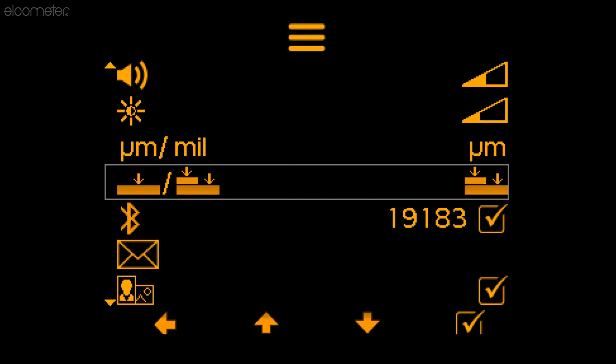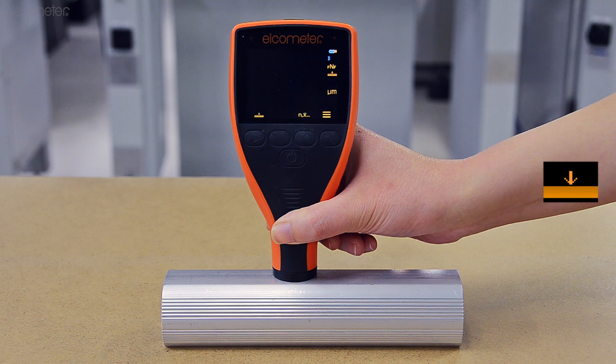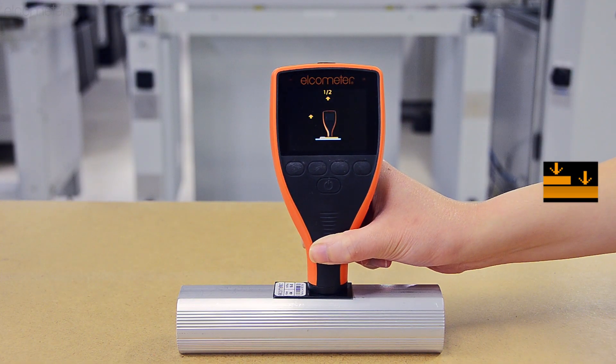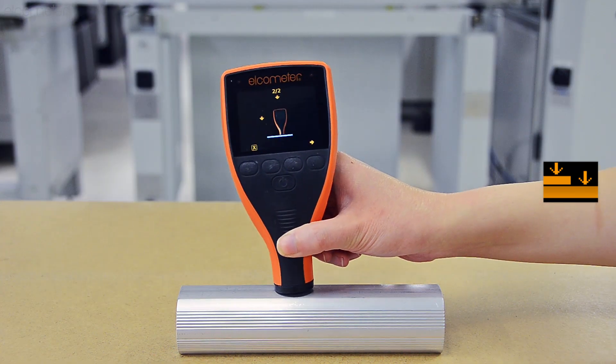Calibration is straightforward too, just select one point which uses an uncoated substrate or two point calibration which uses an uncoated substrate and a calibration foil and follow the gauge prompts.